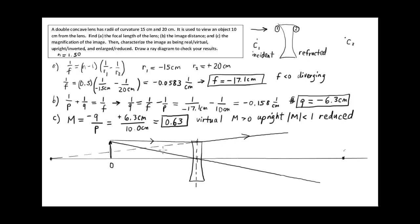With arrows on the diagram: light from the tip of the object comes in parallel to the optical axis and emerges along the path that would have taken it through the focal point on the same side. The central ray goes straight through without deflection. You can see these two rays don't cross on the right-hand side — no real image forms there. We take the two rays and project them backwards to see where they cross on the incident side, and that crossing point is the tip of the image arrow.